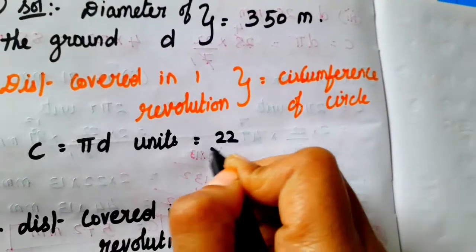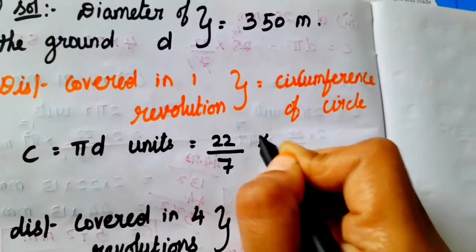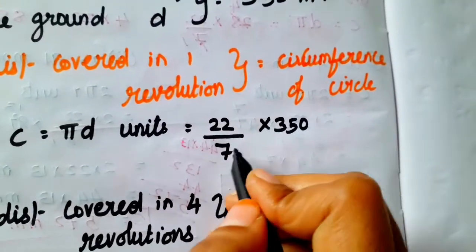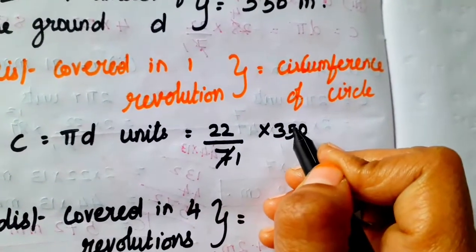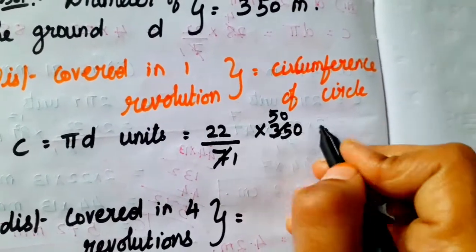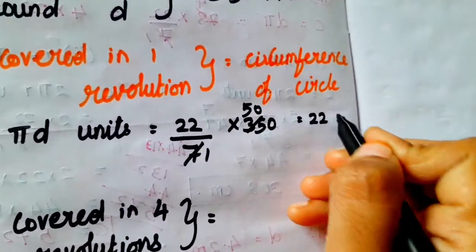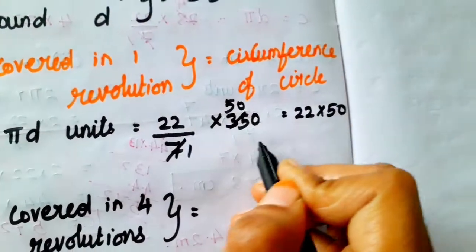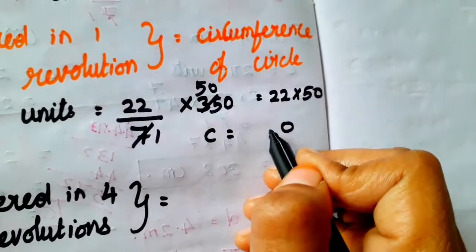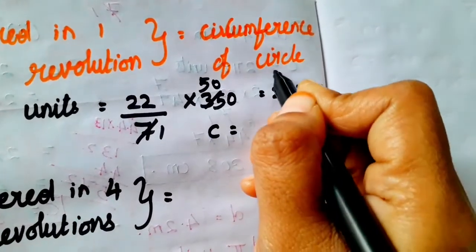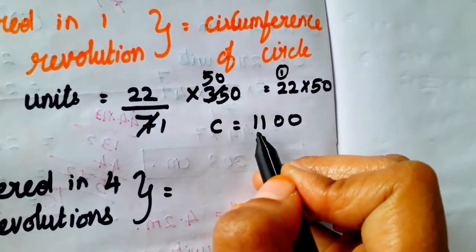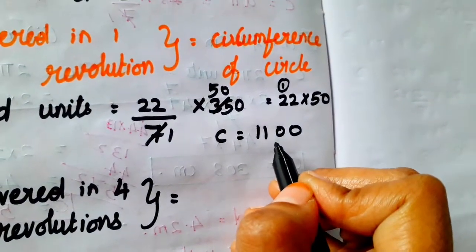C = 22/7 into d = 350. Cancel: 350 divided by 7 is 50. So C = 22 into 50. Multiply: 5 twos are 10, carry 1; 5 twos are 10, plus 1 is 11. So C = 1,100 meter.